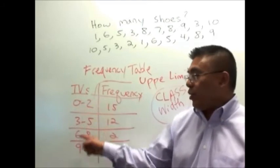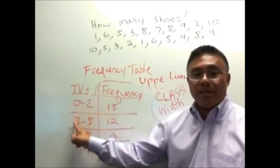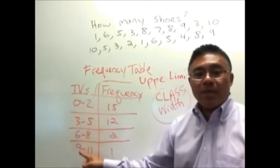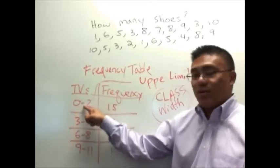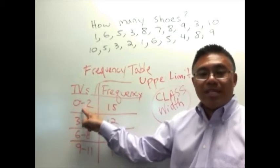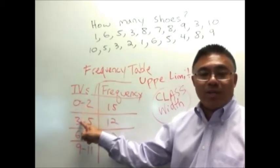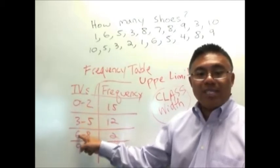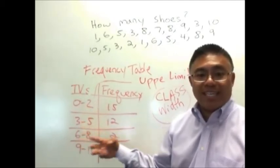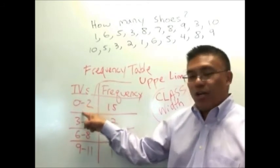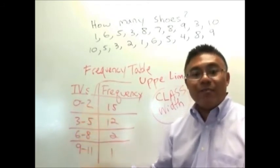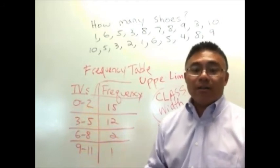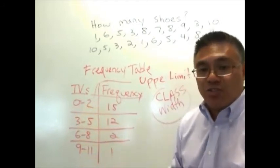What I want you to do is take a look at the lower limits. What's the difference between all the lower limits? Well, the difference is three. Zero is the first lower limit. Three is the next lower limit. That difference is three. This lower limit is six. This difference between three and six is three. So take a look at the lower limits and the difference between the lower limits tells you the class width.